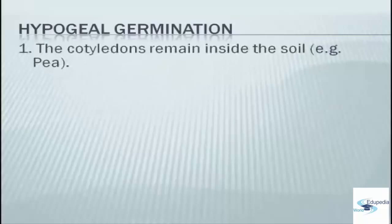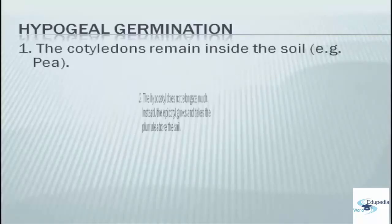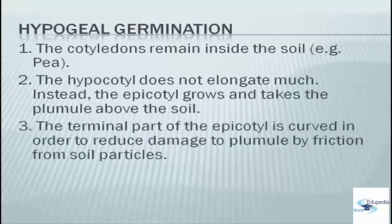The process of hypogeal germination involves the following steps: first, the cotyledons remain inside the soil; second, the hypocotyl does not elongate much; instead, the epicotyl grows and takes the plumule above the soil. The terminal part of the epicotyl is curved in order to reduce damage to the plumule by friction from soil particles.